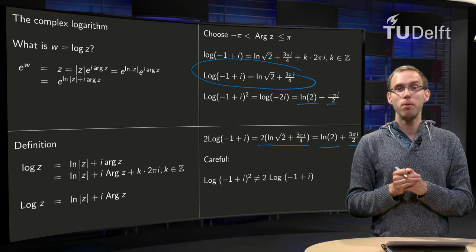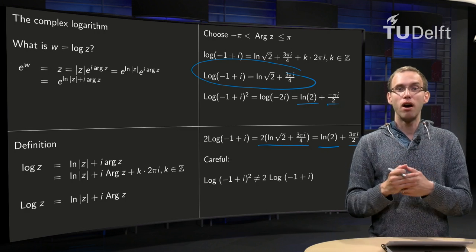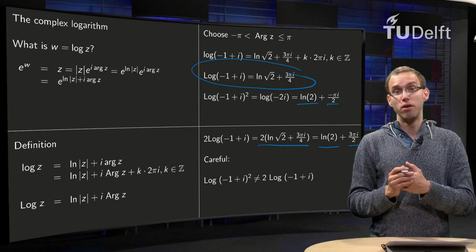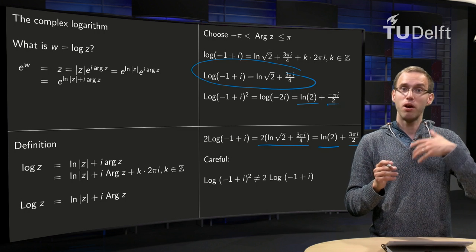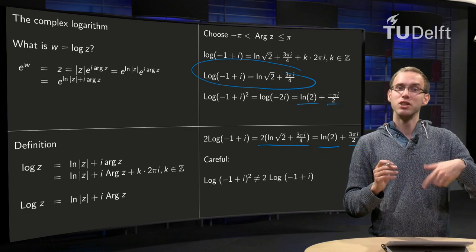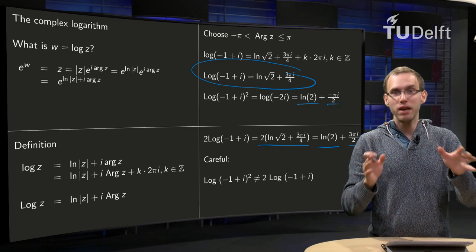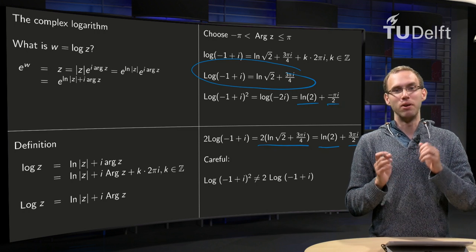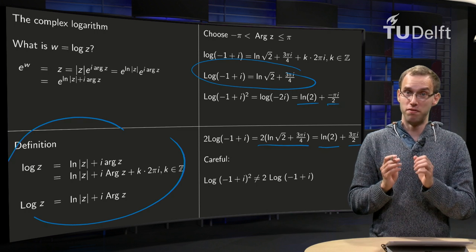So that is quite a problem. If you define the log as the capital Log, it becomes one-to-one — that is fine — but now all of a sudden our familiar rules do not hold anymore. Why is that? The argument of the capital Log must also be between minus π and π. For the Log of (−1+i), our argument was 3π/4. When we doubled it, we got 3π/2, which was outside this range, so we had to adjust by a multiple of 2π — and that is why they are not equal. So if you take the capital Log you remove one problem — the multivaluedness — but you get other problems back. Main message: if you have complex logarithms, we can work with them, but you really need to be very, very careful.